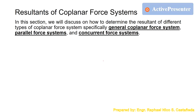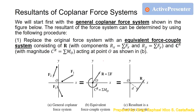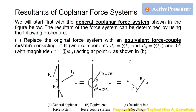In general, we have three types of coplanar or two-dimensional force systems. The first is the general coplanar force system, the second is the parallel force system, and the third is the concurrent force system. We will discuss each one. Let's start with the general coplanar force system, which is a type where the forces are on a two-dimensional XY plane.